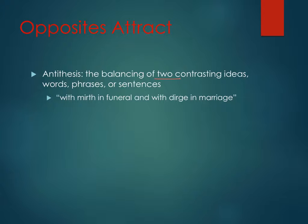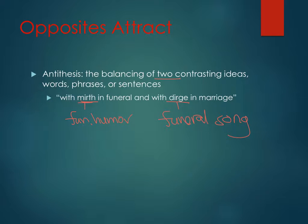"With mirth in funeral and with dirge in marriage." To understand how this is antithesis, we'll need to define a couple of words. Mirth is actually fun or humor, and dirge is a funeral song. They're combined here to show that there's some conflicting emotion going on. So if I want to talk about what this quote means, I would say — after I've identified that it's antithesis — that this quote means that sometimes we feel conflicting emotions. We might feel happy at a funeral, and we might feel great sadness at a marriage, depending on what's going on around us.